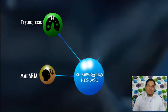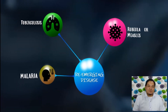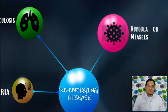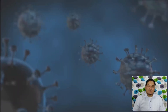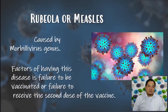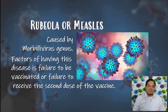3. Rubella, also known as measles. This is an example of a re-emerging disease caused by Morbillivirus. Factors for having this disease include failure to be vaccinated or failure to receive the second dose of the vaccine.